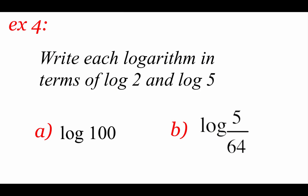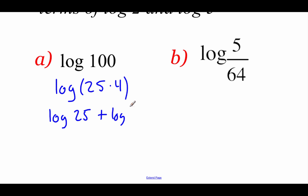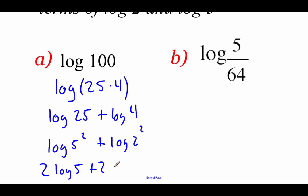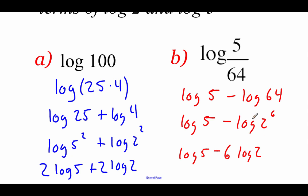In the next couple of examples we're using 2's and 5's to rewrite logarithms. For log of 100, we can take 25 times 4 to get 100, so we rewrite as log of 25 plus log of 4. Since we need 2's and 5's: 25 is 5 squared and 4 is 2 squared. Using the power property to pull each power down, we get 2 log of 5 plus 2 log of 2. For the next one, using the quotient property: log of 5 minus log of 64. We rewrite 64 as 2 to the 6th power and use the power property to pull the 6 down, giving log of 5 minus 6 log of 2.